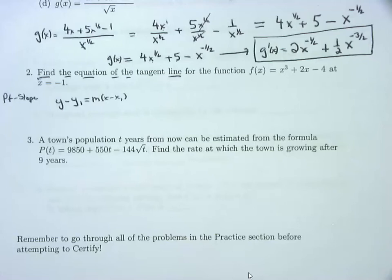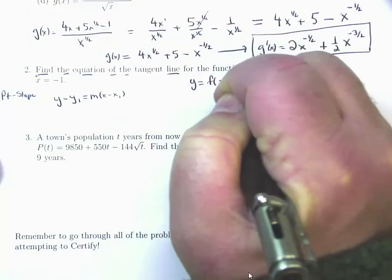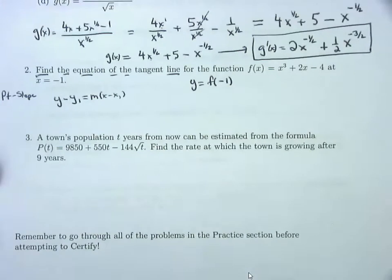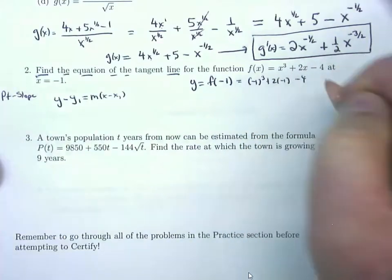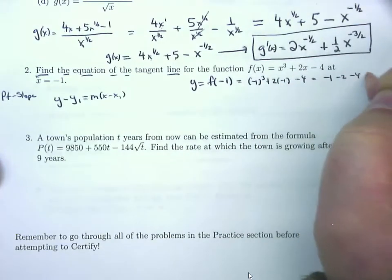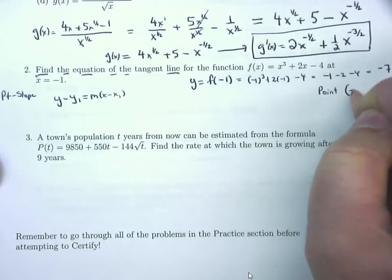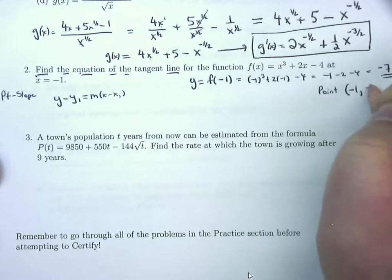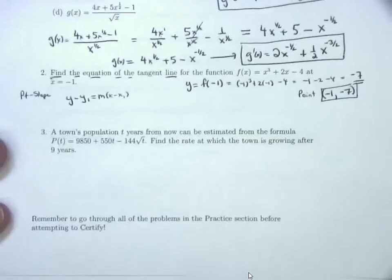f(−1) = (−1)³ + 2(−1) − 4 = −1 − 2 − 4 = −7. So the point is (−1, −7). Now we need the slope. In calculus, 'slope of the tangent line' means take the derivative. f′(x) = 3x² + 2 (derivative of x³ + 2x − 4). The slope of the tangent line is the derivative evaluated at x = −1.